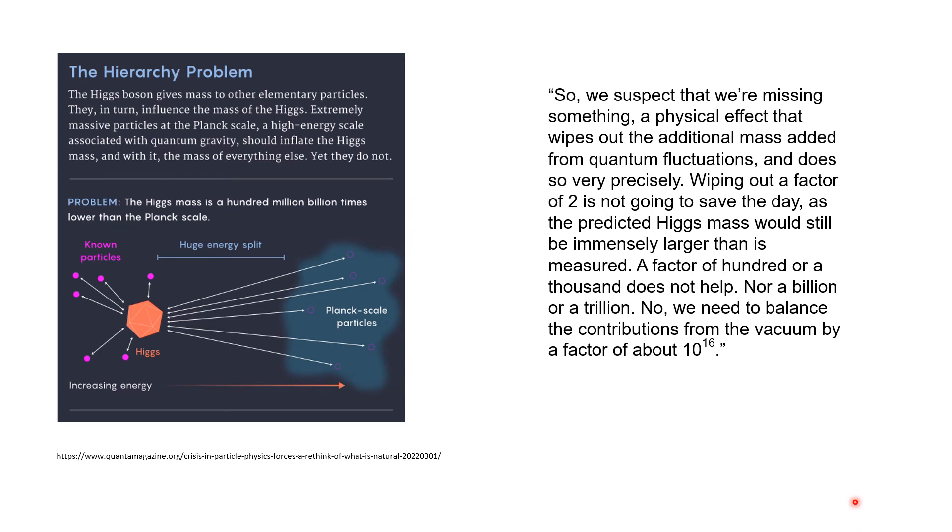Wiping out a factor of two is not going to save the day, as the predicted Higgs mass would still be immensely larger than is measured. A factor of a hundred or a thousand doesn't help, nor a billion, nor a trillion.